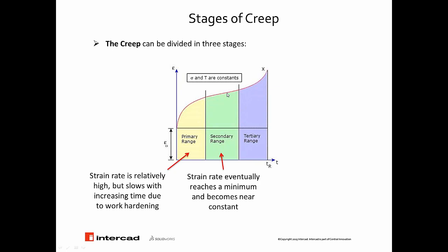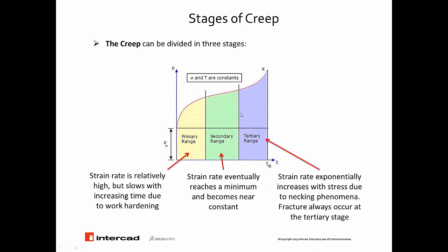If you continue the application of stress on the structure, you reach the third stage, where the strain rate exponentially increases with stress. What is happening is a necking problem — at some cross-section, the cross-section is decreasing and the material simply reaches fracture. So what we see is: first the strain rate increases, then becomes constant, and then if you keep applying load you get fracture, and this is exactly where you can see cracking or a broken part.